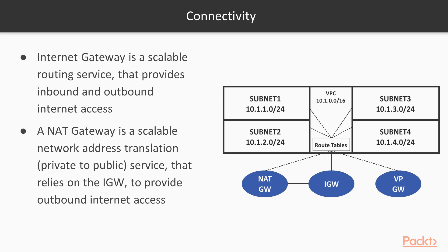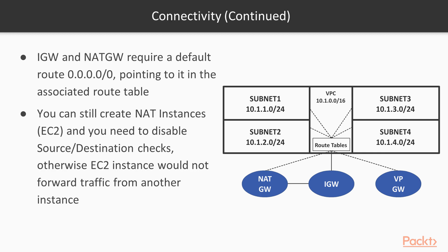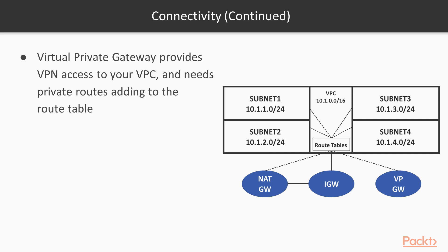You can consider a NAT gateway slightly more secure than an internet gateway, though you still have security rules and network access controls. You'll often see the term NAT instance — you can deploy EC2 instances to act as your NAT gateway, but this is not recommended practice anymore as it's not scalable. It's preferred to use a NAT gateway, which is an Amazon service. If you want to connect to your own private data center or a third party over a private link, you can use a virtual private gateway, which provides private access through a VPN or a tunnel.